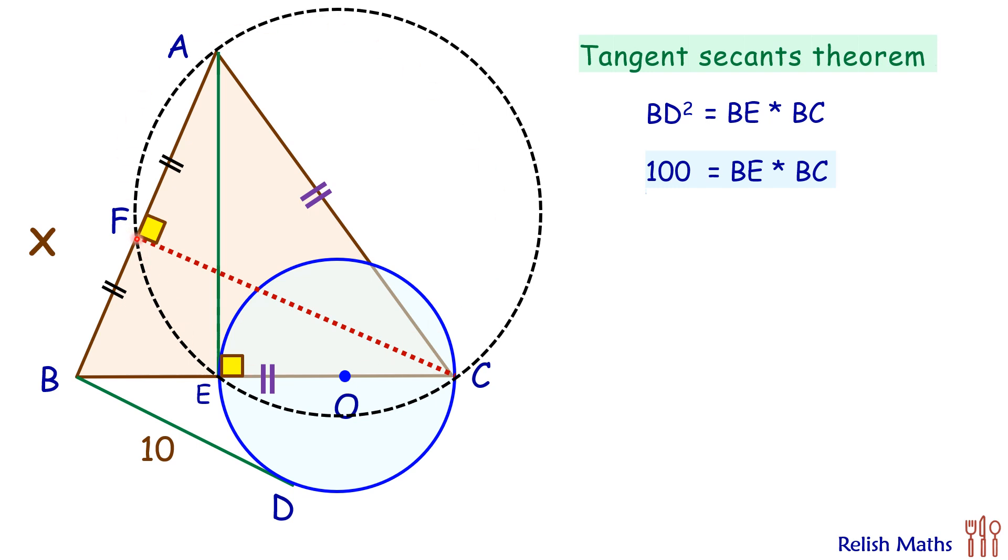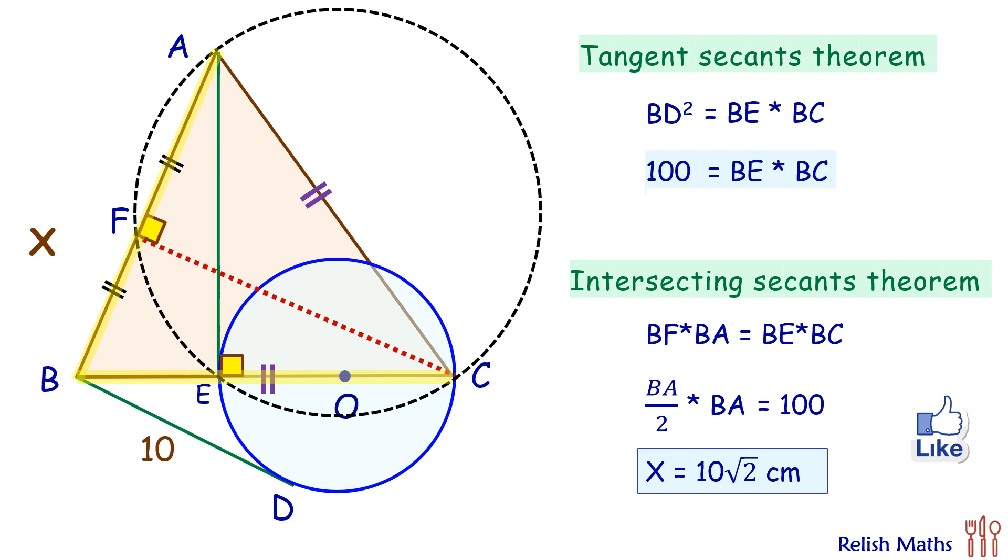Now with respect to this black circle, BA is a secant and BC is also a secant. Applying intersecting secant theorem we get BF times BA equals BE times BC. But F is the midpoint, so we know that BF is half times BA, and BE times BC we know is 100. So solving this we get BA, that is x, equals 10 root 2 centimeters.